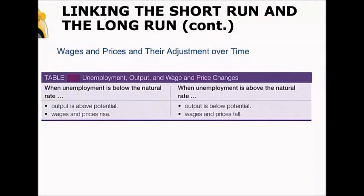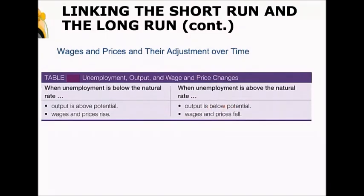This is the adjustment we're going to see between the short run and the long run. If we have a short run equilibrium where output is below potential output, then unemployment is above the natural rate — we're not hiring enough people. You can think of this as an excess supply of labor, and under these circumstances wages and prices are going to fall. This is the adjustment mechanism as we look at the transition from the short run to the long run.